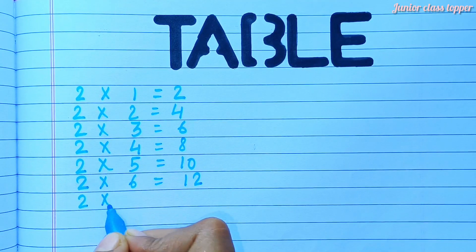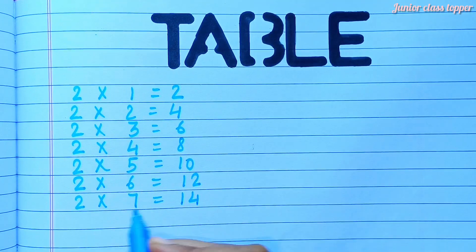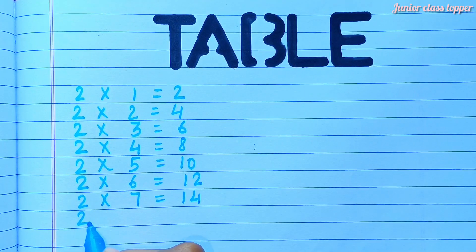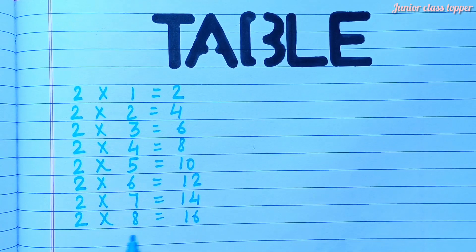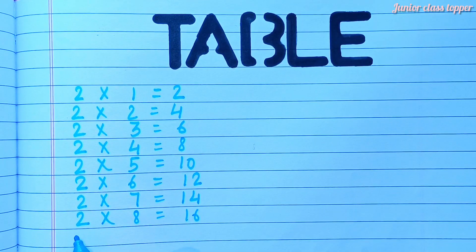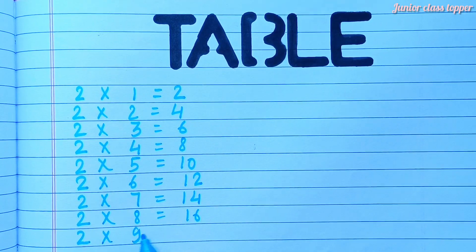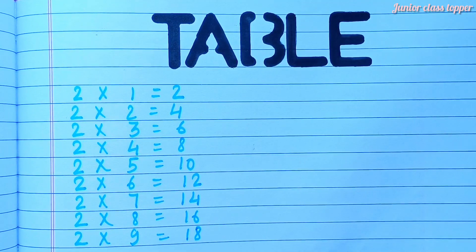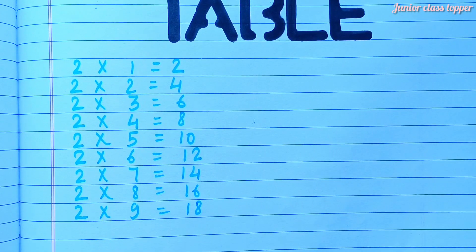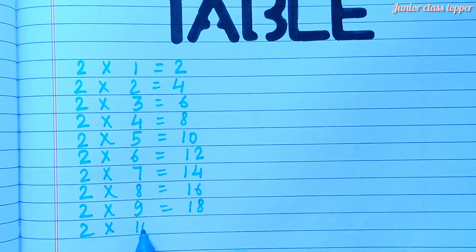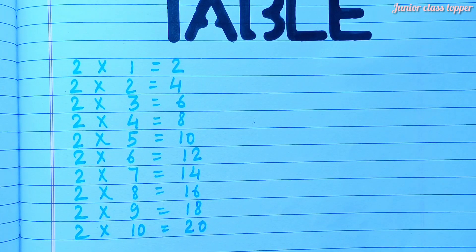Two sevens are fourteen. Two eights are sixteen. Two nines are eighteen. Two tens are twenty.